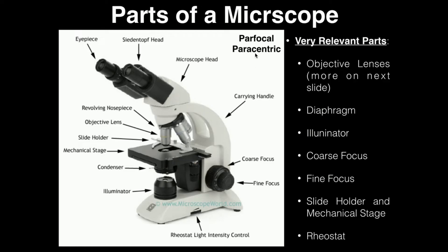These microscopes are also paracentric. Paracentric is very similar, except it has to do with the object under question being centered. So when you have, let's say under this objective lens, you center your visual field right on that object you're looking at — when you switch to the next objective lens, if this microscope is paracentric, then it should still be centered. That specimen should still be centered under all of these. So these microscopes have these two properties.